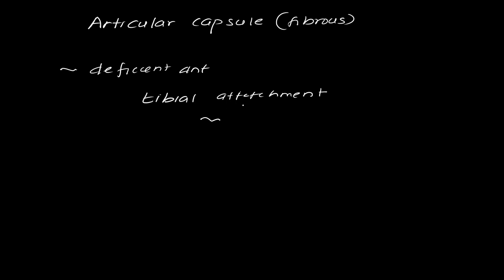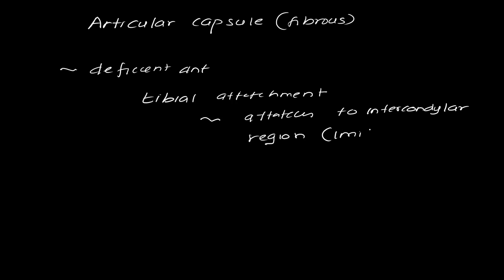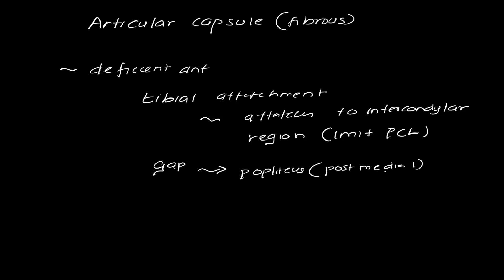Looking closely, the tibial attachment attaches to the intercondylar region, thereby limiting the bounding of the posterior cruciate ligament — limiting PCL attachment. That is a small point that might come in some MCQs. There are also few gaps present in the anterior capsule which allow the popliteus muscle to run down within the knee joint in a posteromedial manner. The gap is present posteromedially for the purpose of the popliteus.